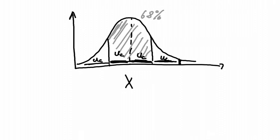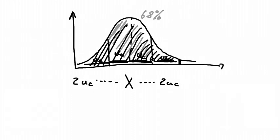So we expand it in this direction as well. Then we have two uc's. That's the two uc range in both directions. And this now would cover 95% of our uncertainties, of the possible uncertainties.